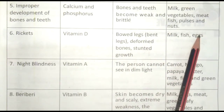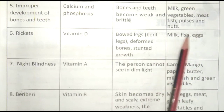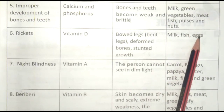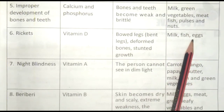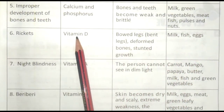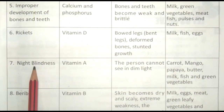Food sources to fulfill Vitamin D deficiency: Milk, Fish, Eggs — Doodh, Machli, Ande. In bhojan ko khane se Vitamin D ki kami poori ho jati hai.